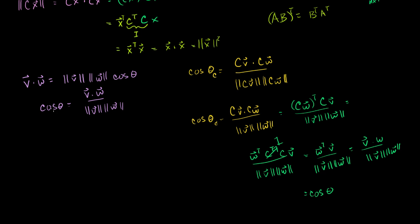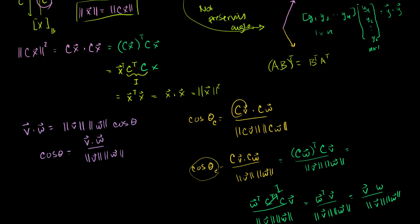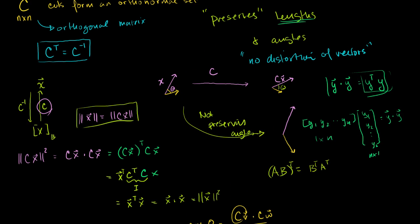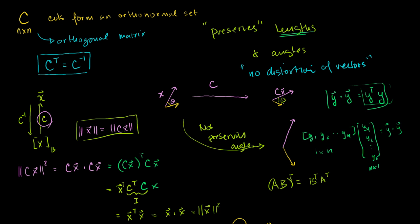By our definition of angle as the dot product divided by the vector lengths, when you perform a transformation — or a change of basis — with an orthogonal matrix C, the angle between the transformed vectors does not change. It's the same as the angle before they were transformed. So transformations with orthogonal matrices don't distort the vectors — they might rotate them or shift them a bit, but they don't change the angles between them.